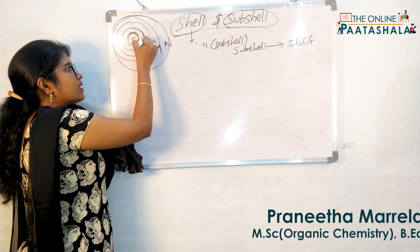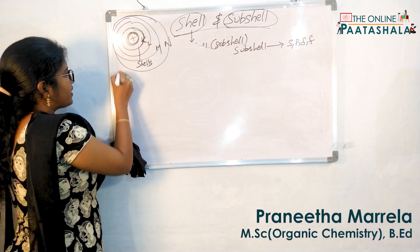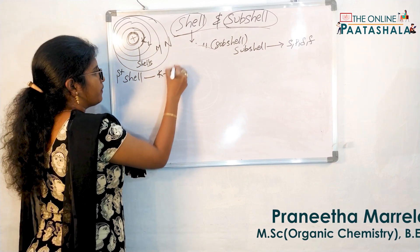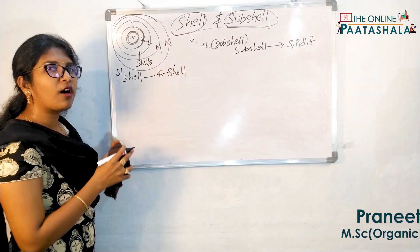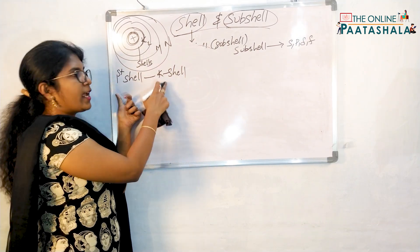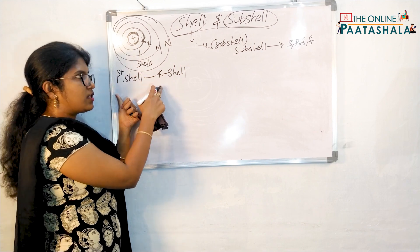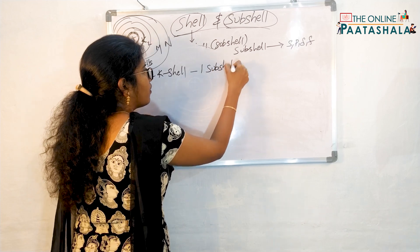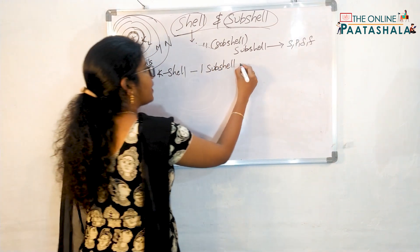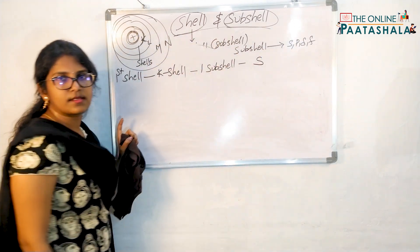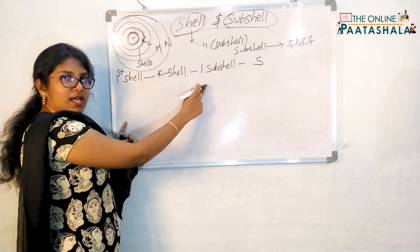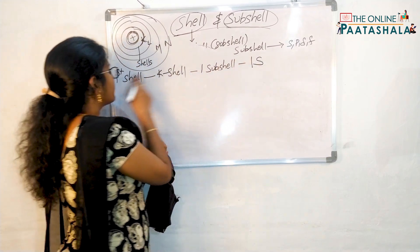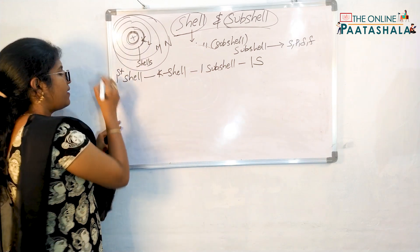Nearest to the nucleus, K is the first shell. The first shell, K shell, will be having only one subshell — that is S. You will number it as 1S because we are talking about the first shell.